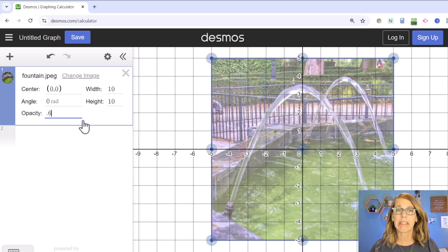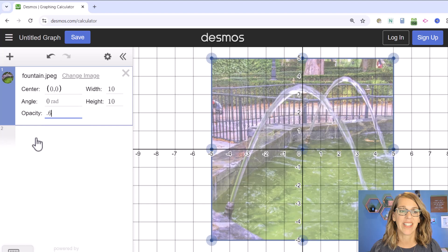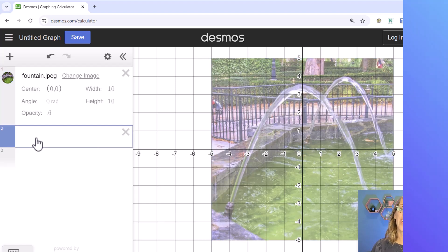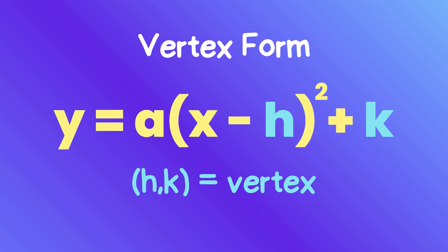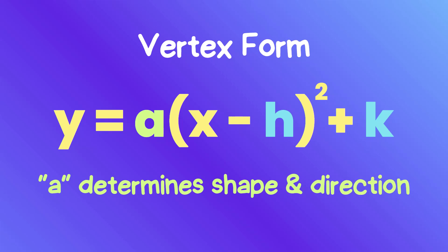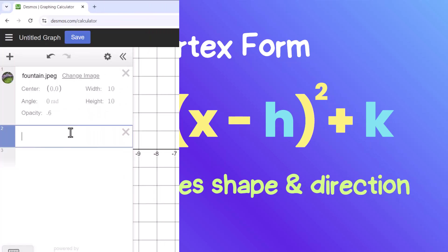We're going to be using the vertex or general form of the parabola where h comma k is our vertex and a, that multiplier out in front, determines the shape and direction of this parabola.